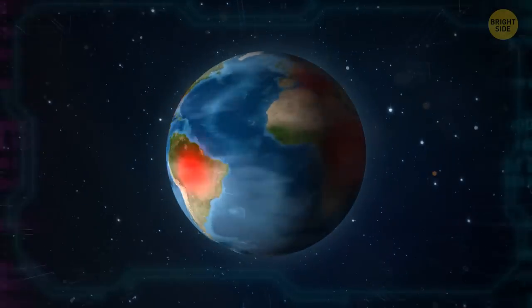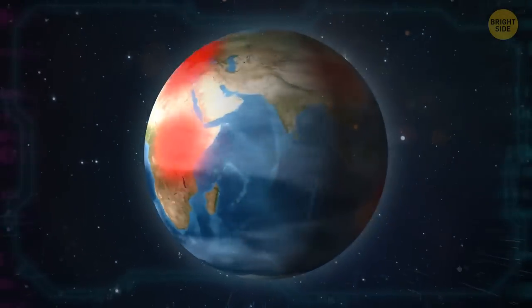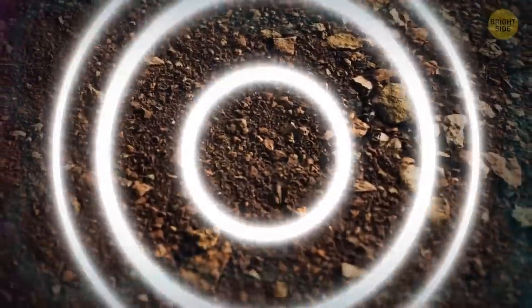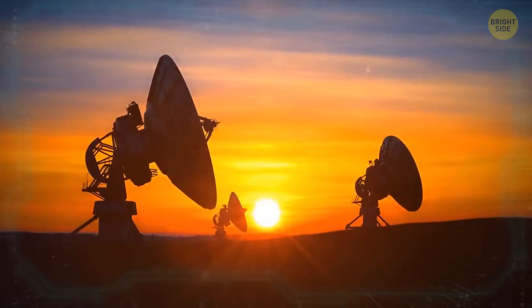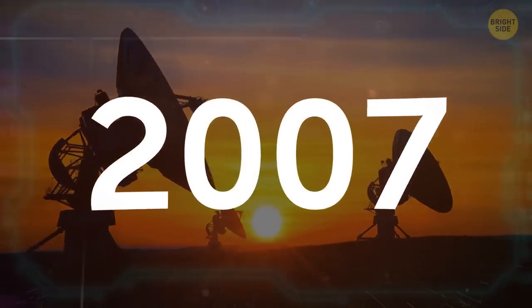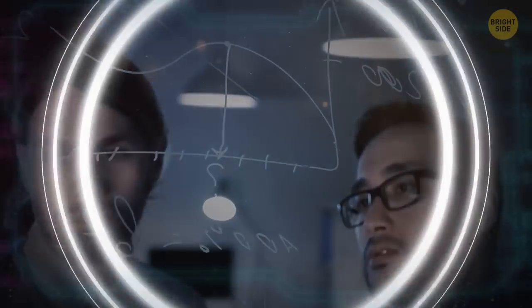Strange radio waves are beaming down on Earth, and scientists are baffled. These fast radio bursts are sudden, unexplained, and last just milliseconds. We first picked up the weird signals in 2007, and scientists have been scratching their heads ever since.